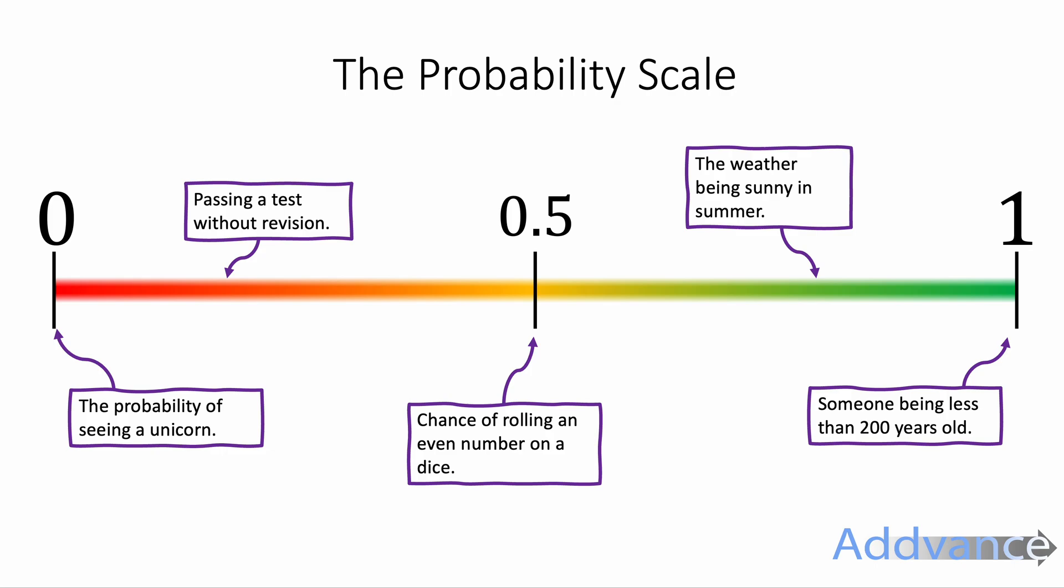The chance of passing a test without revision would be unlikely. The weather being sunny in summer is quite likely. And the chance of rolling an even number on the dice is a half, because half the numbers on the dice are even.